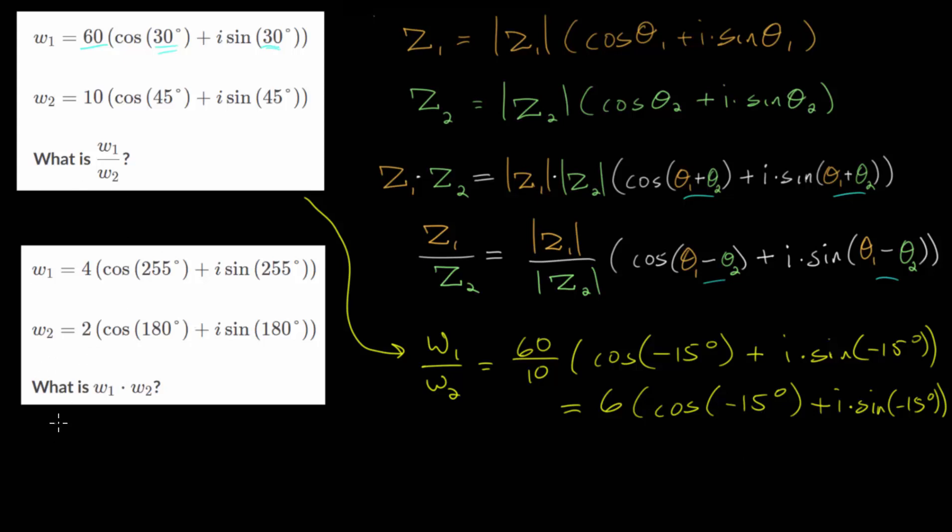For this second problem, we are multiplying W1 times W2, where we have different expressions for both W1 and W2. When multiplying, remember that we multiply the two moduli or the magnitudes of these complex numbers. We would have 4 multiplied by 2 here, and we add the angles.